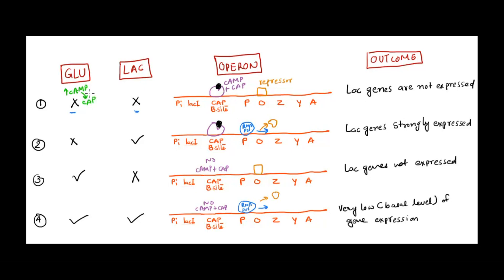But there is no lactose, so there is no allolactose to bind with the repressor, and the repressor cannot be removed. Even though the cyclic AMP–CAP complex is bound and signaling high affinity for RNA polymerase, the repressor is still blocking the way, so the lac genes are not expressed. In the condition of no glucose and no lactose, lac genes are not expressed.